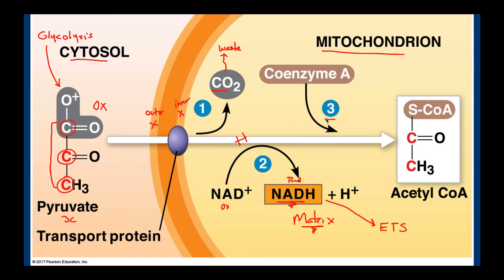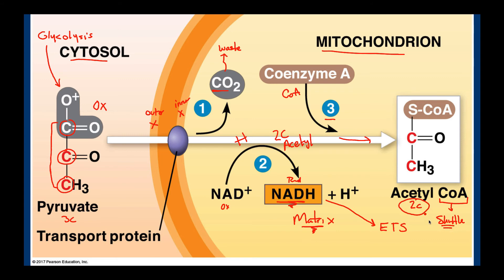Those are the two instances where we have oxidized our pyruvate. Now in the third step — notice the arrows coming in — our coenzyme A, or CoA, is going to come in and bind. We removed a carbon from our pyruvate molecule and ended up with a two-carbon intermediate called acetyl. The two-carbon acetyl is going to combine with coenzyme A and produce what's called acetyl coenzyme A. The acetyl is the two-carbon molecule, and coenzyme A is simply our shuttle — its job is just to shuttle the two-carbon acetyl into the Krebs cycle.